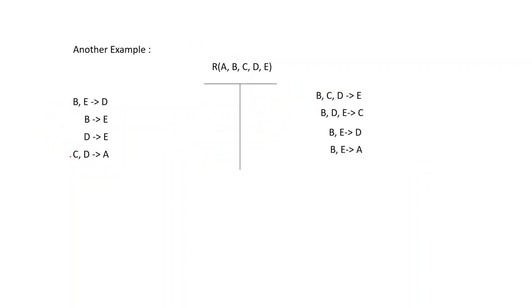Let's take another example. Here we have a relation R with attributes A, B, C, D, E and you have two sets of functional dependencies — one on your left-hand side and one on your right-hand side. Based on the left-hand side functional dependencies you have to conclude if A, B, C, D, E is in BCNF. We have to compute the closure for all four, and if the closure of each functional dependency gives you back the entire relation you can conclude that R is in BCNF.